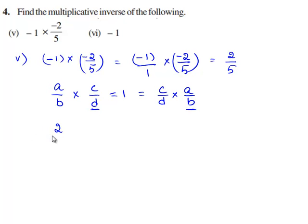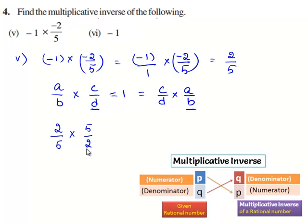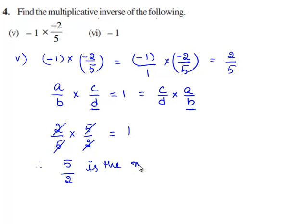Now consider 2/5. If we multiply this rational number with 5/2, we have the common factors 2 and 5 get cancelled and we are left over with 1. Therefore, 5/2 is the multiplicative inverse of 2/5.